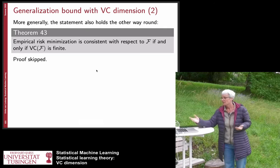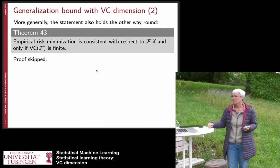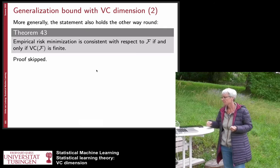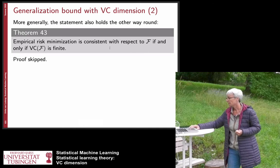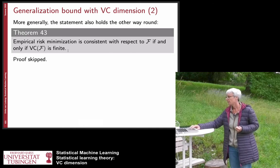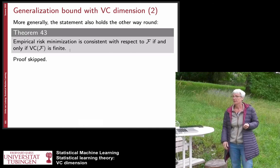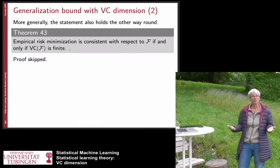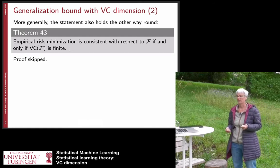More generally, empirical risk minimization is consistent with respect to F if and only if the VC dimension is finite — the statement holds in both directions.